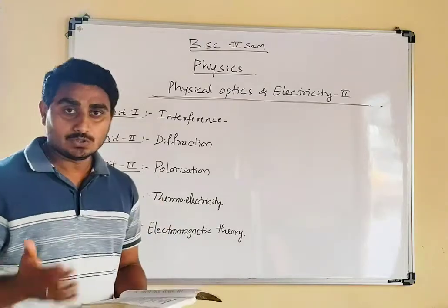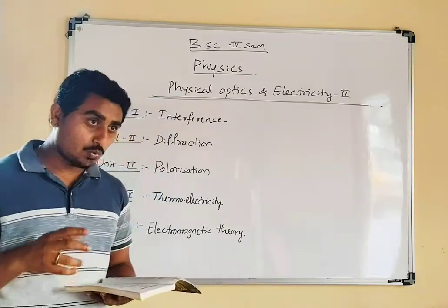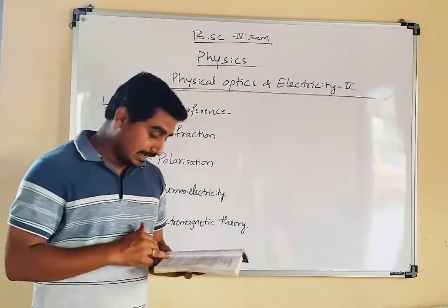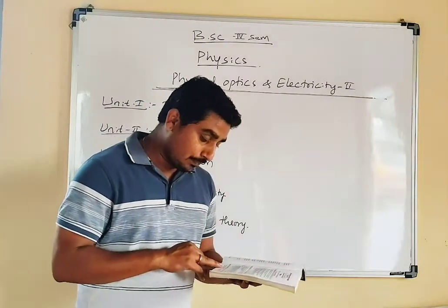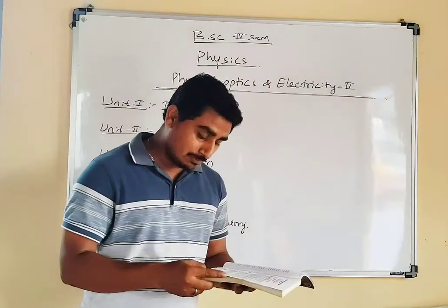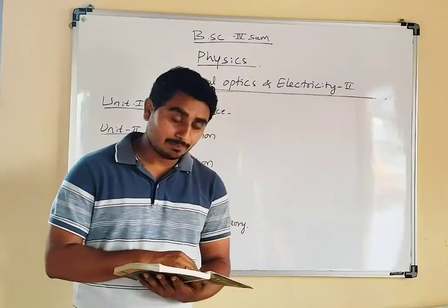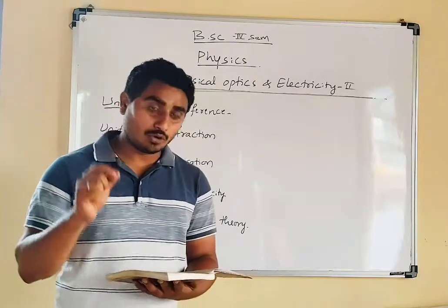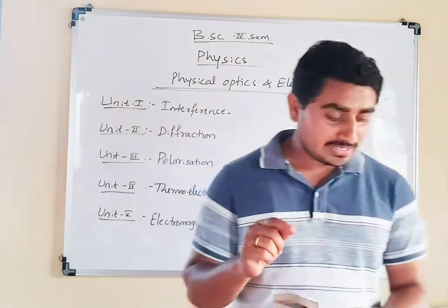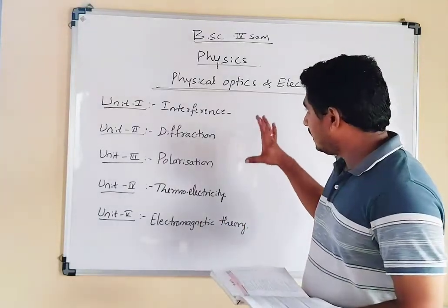The third unit is related to polarization. We will discuss the definition of polarization, Malus's law, Huygens' theory of double refraction, positive and negative crystals, retardation plates — quarter wave plate and half wave plate — analysis of polarized light, production of circularly and elliptically polarized light, optical activity, and Fresnel's theory of rotary polarization. These three units cover physical optics.